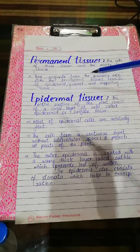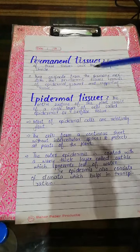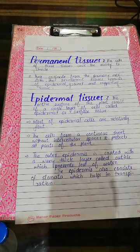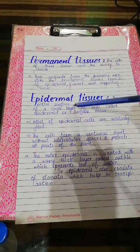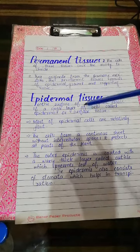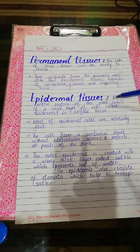The types of permanent tissue are epidermal tissue, ground tissue, and supporting tissue. 'Epi' means upon, 'derma' means skin — over the skin, upon the skin. These are tissues which form the leaf, the stem, and prevent water loss. The entire surface of the plant consists of a single layer of cells called epidermis or surface tissues.